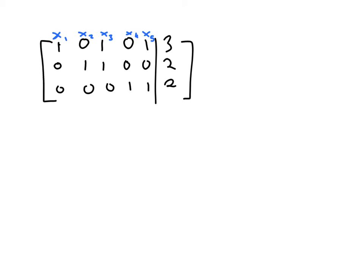So the first thing might be just to take each row and write the corresponding equation. So the equation corresponding to that first row would be 1x1 plus 1x3 plus 1x5 is equal to 3.